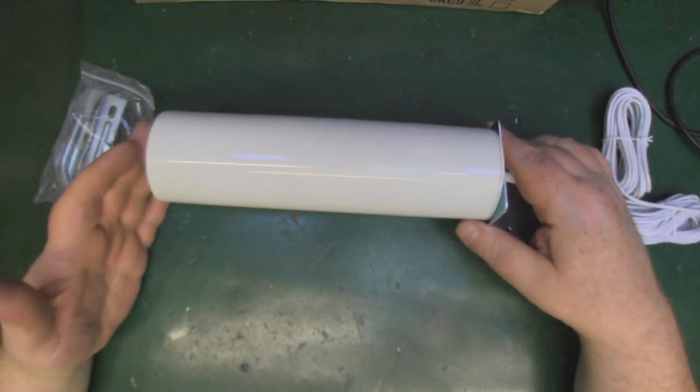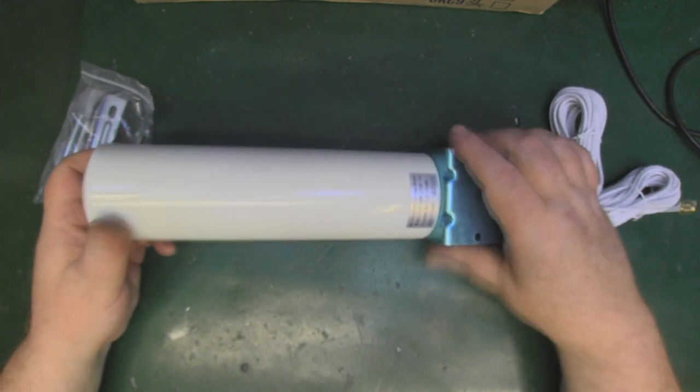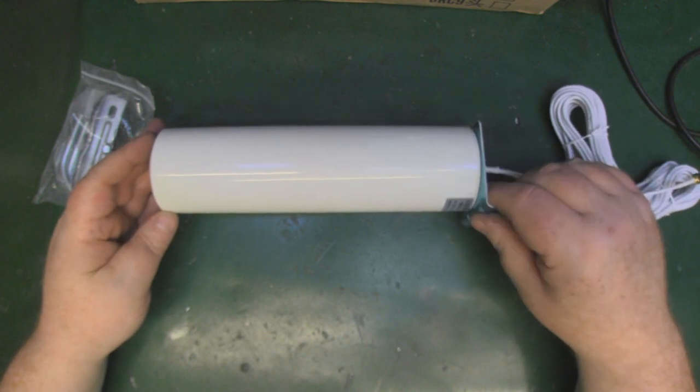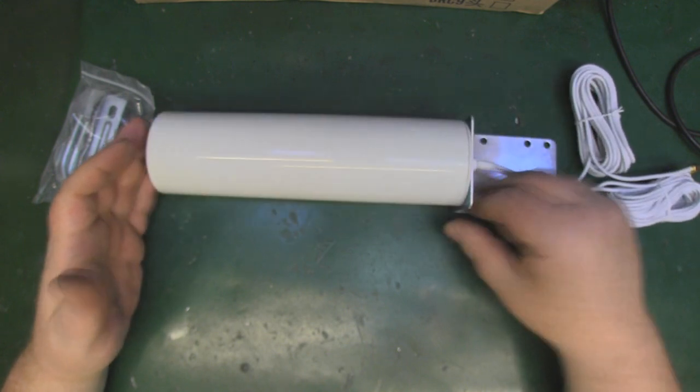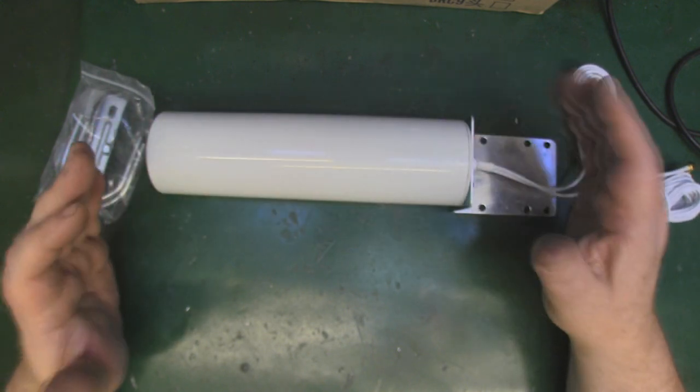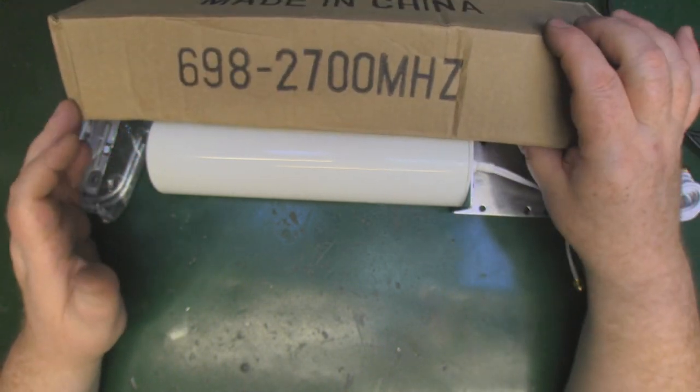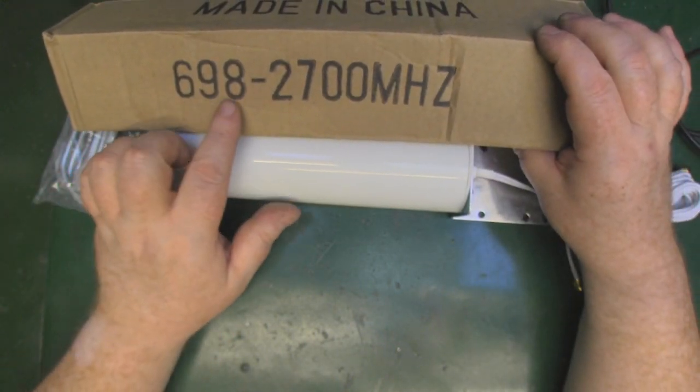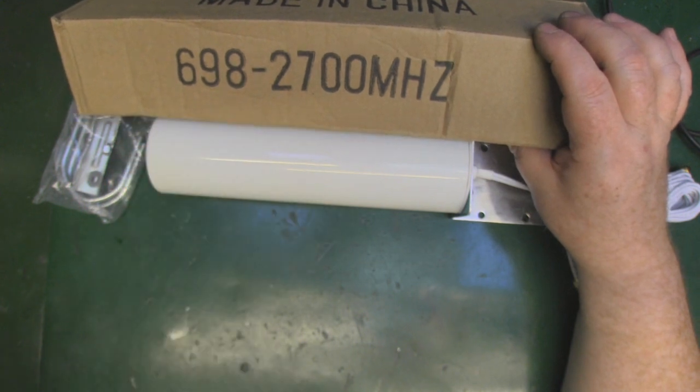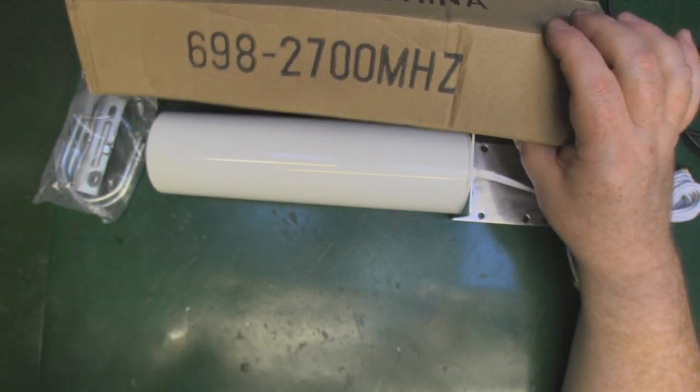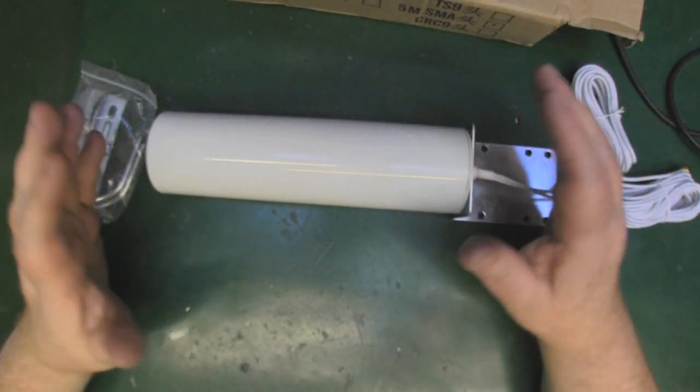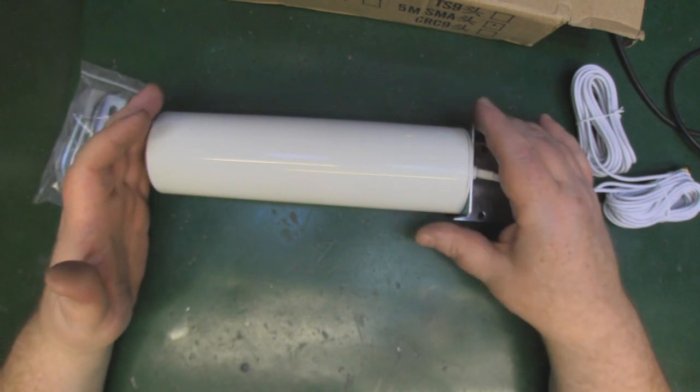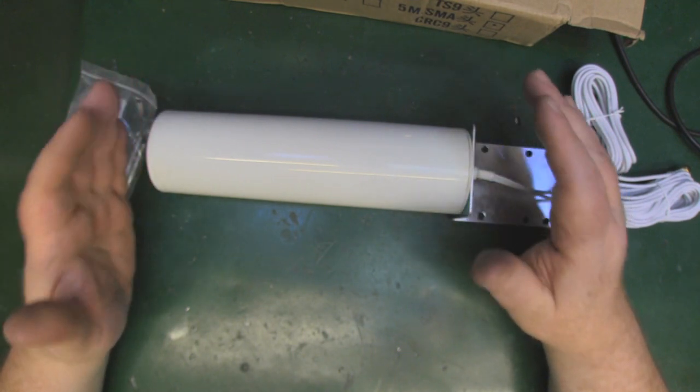Originally I thought this was a Yagi but it's not. It's supposed to be mounted vertically and it's omnidirectional. Not sure what's on the inside yet, but it does cover quite a wide range - 698 megahertz all the way up to 2.7 gigahertz. So it's an extremely wide band antenna on the face of it.